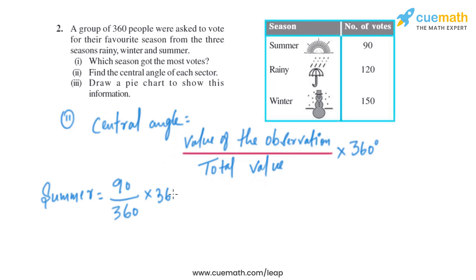Now let's find the central angle of rainy season. It will be 120 divided by 360 multiplied by 360 degrees, which is same as 120 degrees.